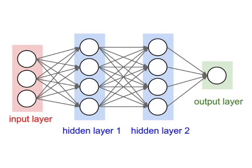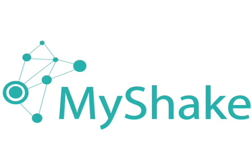Here at the BSL, Qing Kai Kong is using neural networks as part of a citizen science project called MyShake. We'll have him explain how it works.